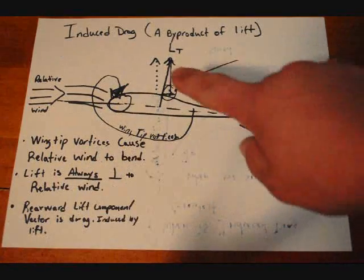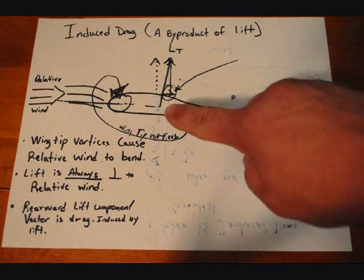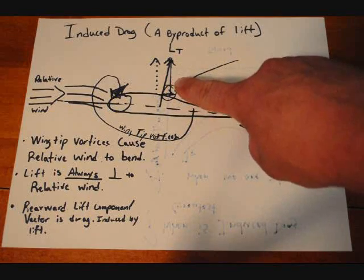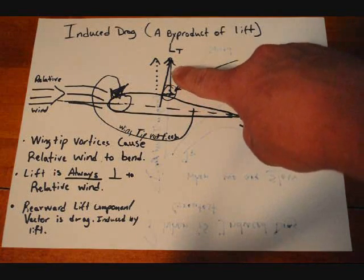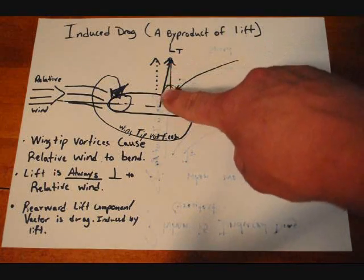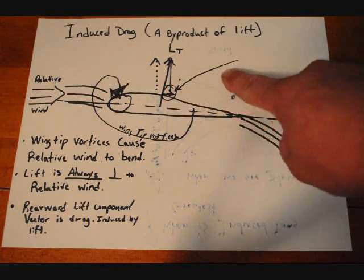When you break that lift vector down into its component vectors, you have the lift that's actually keeping the airplane up in the air here and you have induced drag right here that I have the arrow drawn to.